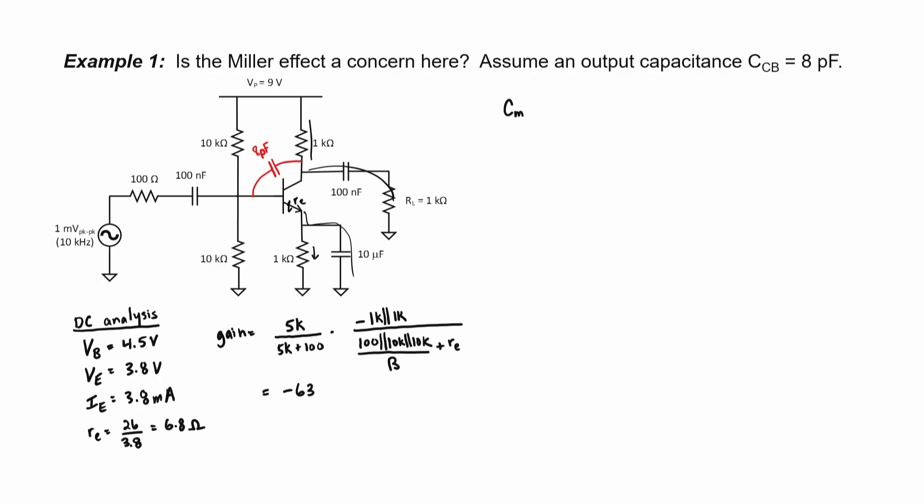Now how about the Miller effect? Well, the capacitor goes between the input and the output. So I want to know what capacitor does it resemble if it were attached directly to ground. So I want to replace that 8 pF capacitor with an equivalent Miller capacitance that goes directly to ground. That makes it easier to calculate the effects of that capacitor on the high frequency performance of the filter.